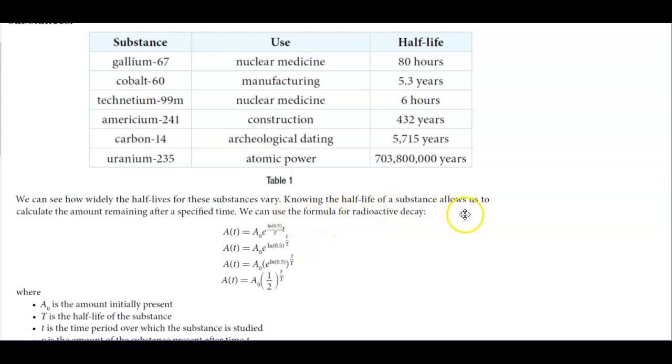Knowing the half-life of a substance allows us to calculate the amount remaining after a specified time, and we can use the formula for radioactive decay. So here for gallium you have 80 hours for half-life. At uranium you can see that it's 703,800,000 years.